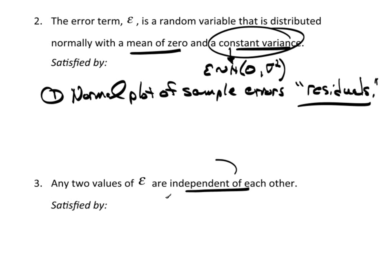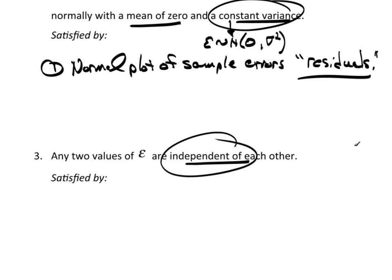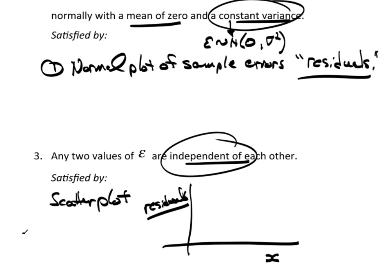Now, the constant variance and this next assumption that any two values of epsilons are independent of each other, both of these are satisfied by a scatter plot. Where on the x-axis, I'm going to put down whatever I'm using to predict with. Whatever I use from a raw scatter plot, that x value, and then the y value are going to be my residuals.